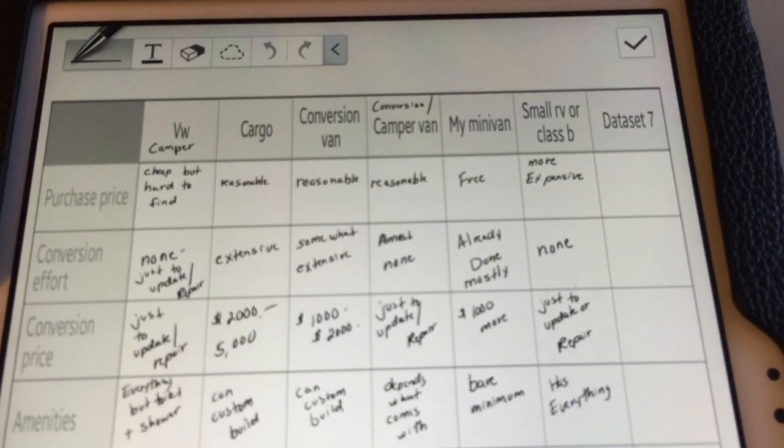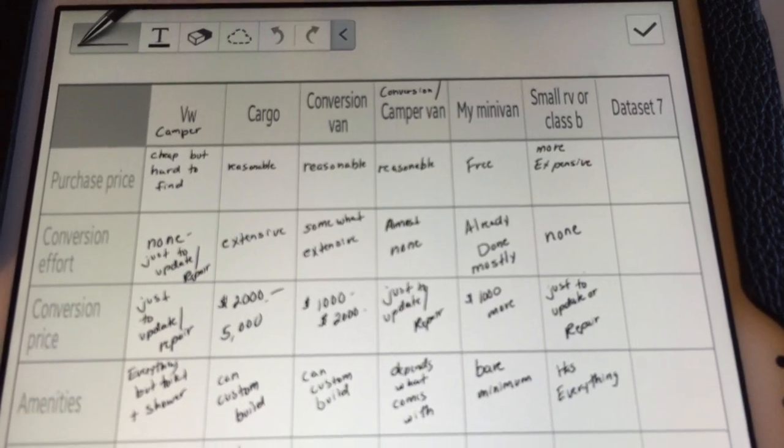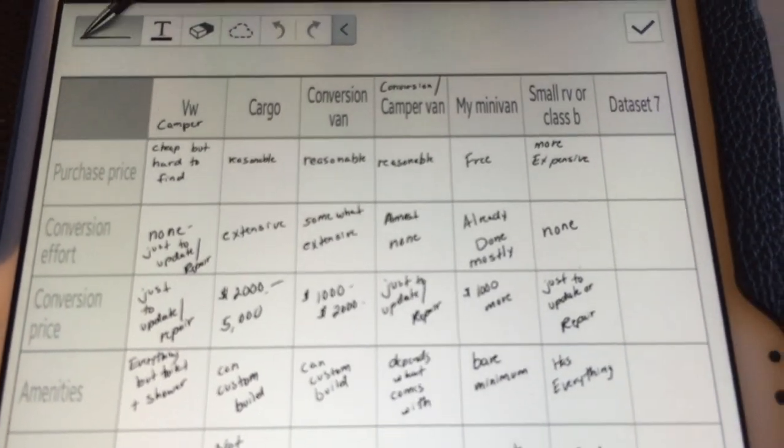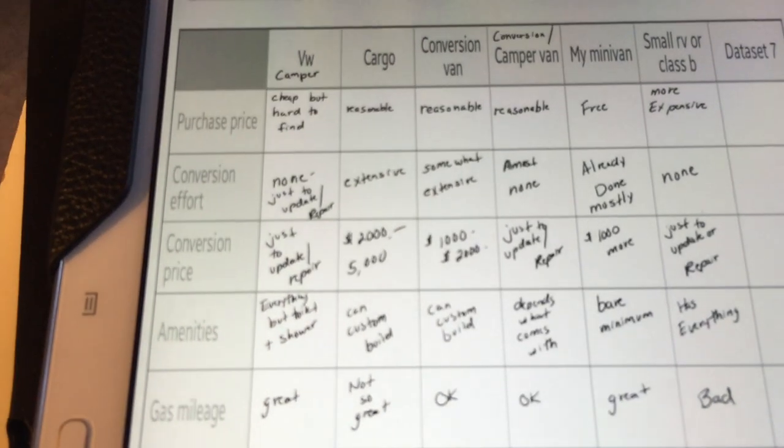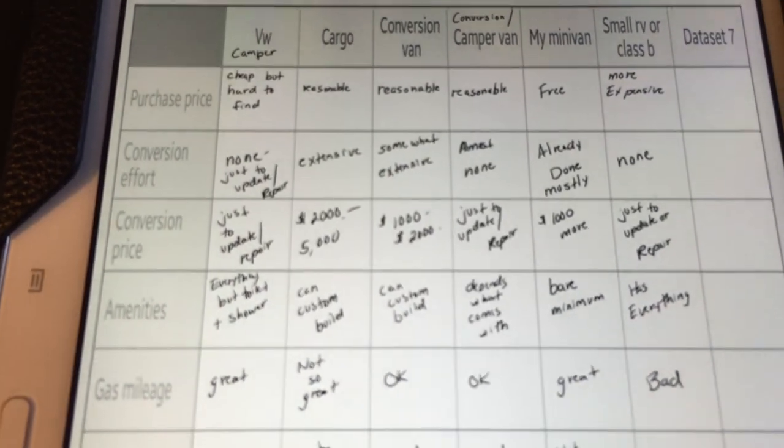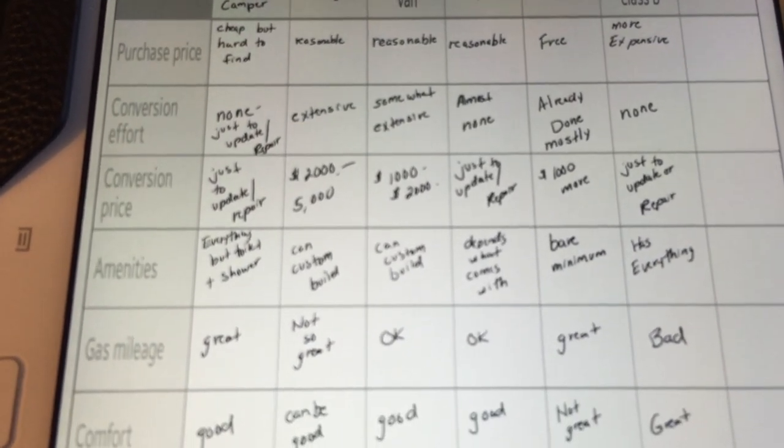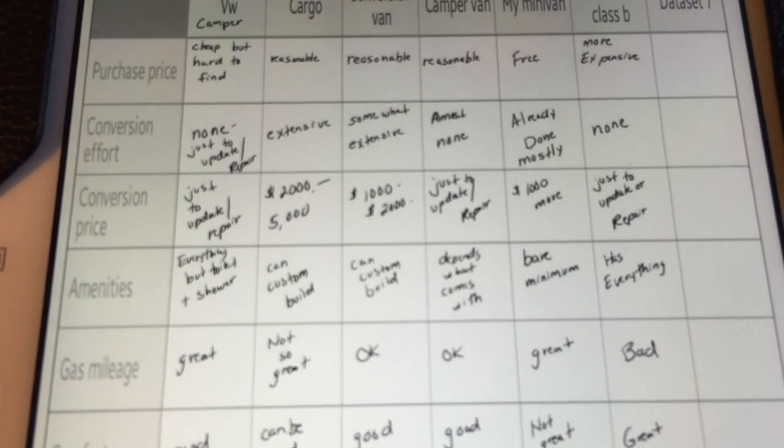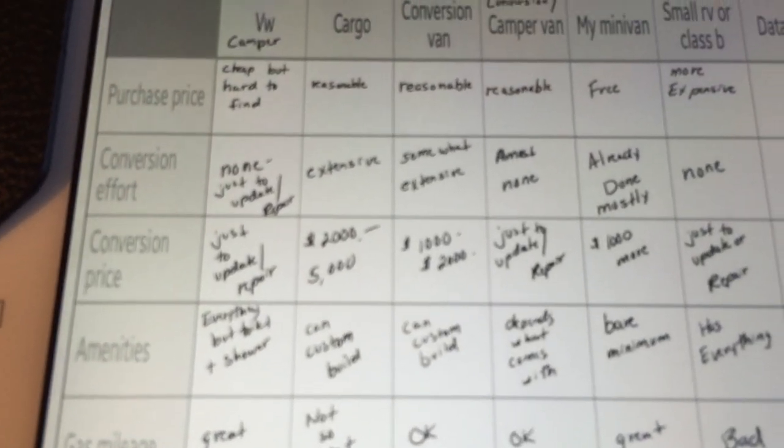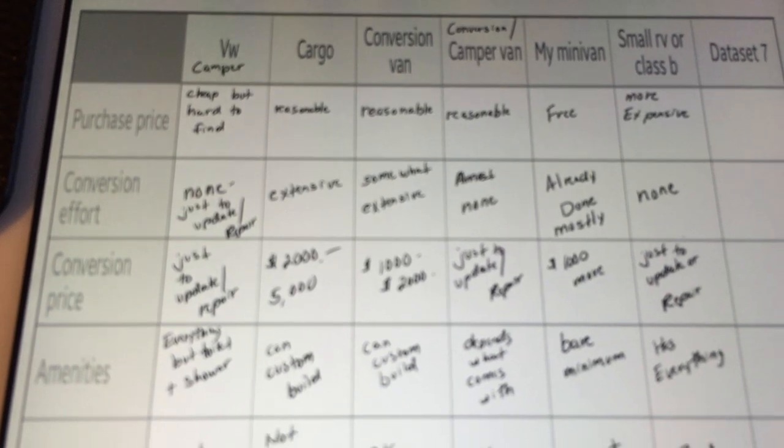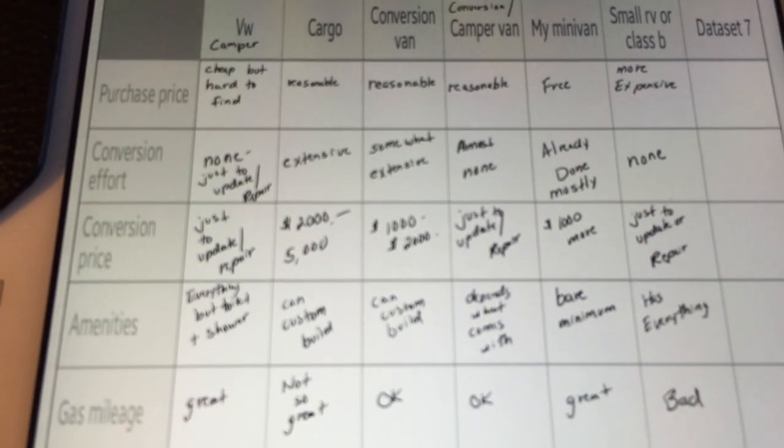So then a small RV or class B, I put none for conversion effort. Obviously it might need repairs though. And then the price. I'm not really even going to go through all of these because these are what's unique to my opinion. I will show them to you.